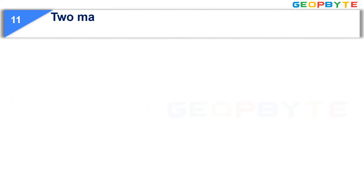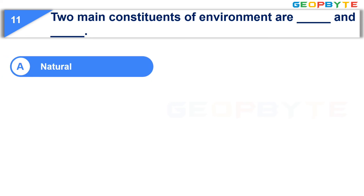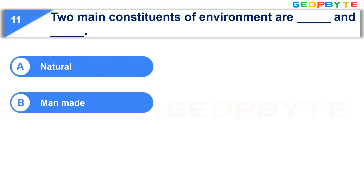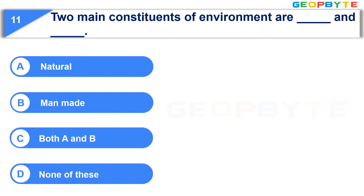The eleventh question is: Two main constituents of environment are dash and dash. Option A: Natural. Option B: Man-made. Option C: Both A and B. Option D: None of these. Your time starts now.